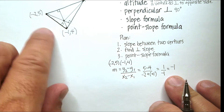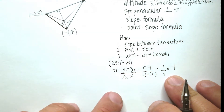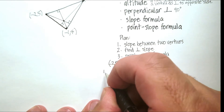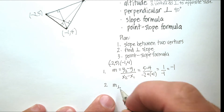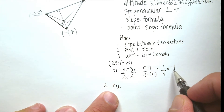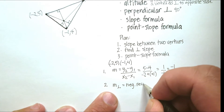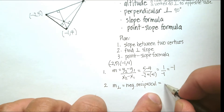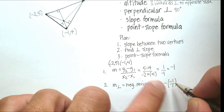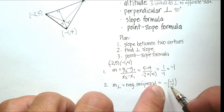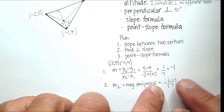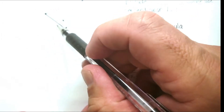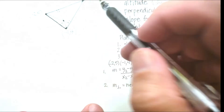Now we find the perpendicular slope by taking the negative reciprocal. The negative reciprocal of −1 is −(−1/1) = positive 1. So the perpendicular slope is 1. Since this altitude passes through the opposite vertex (0, 6), we'll use the point-slope formula with that point.